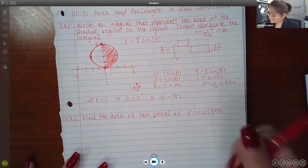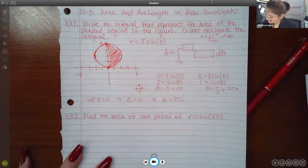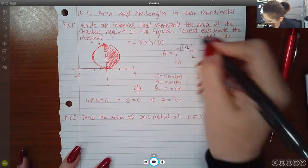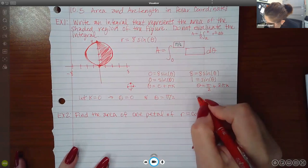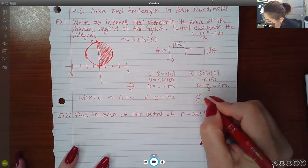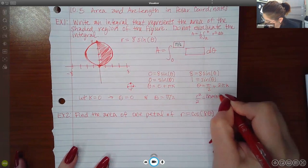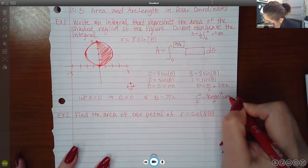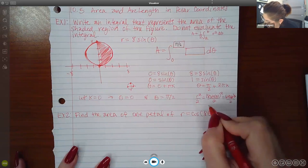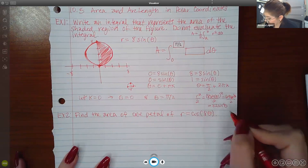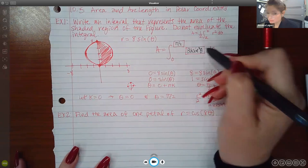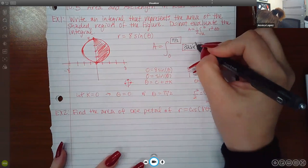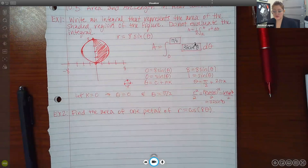They already took this one. If I let k equals zero, then I get one answer as theta equals zero and theta equals pi over two. It does give me that lower bound zero, and I found the upper bound, which is pi over two. So it's going from zero to pi over two.